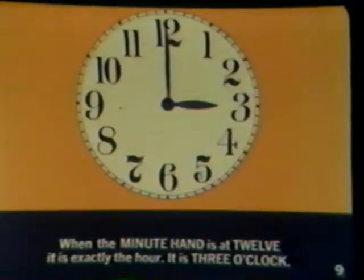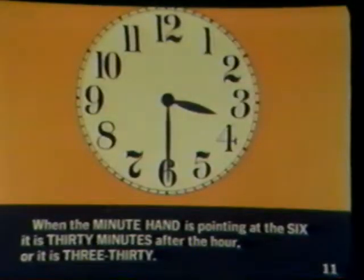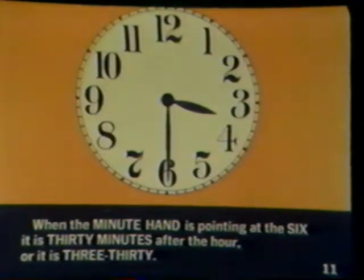When the minute hand is at 12, it is exactly the hour — it is 3 o'clock. There are 60 minutes in an hour, so most clocks have 60 little marks around its face. When the minute hand is pointing at the 6, it is 30 minutes after the hour, or it is 3:30.